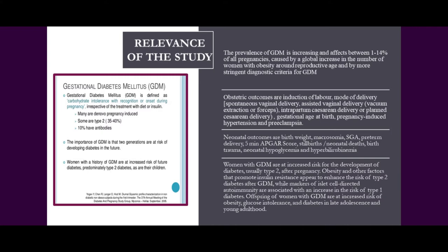So far as the obstetric performance of the woman is concerned, there are many effects. Labor is induced quite early in the pregnancy period. Mode of delivery could be spontaneous vaginal delivery, or vacuum extraction or forceps may be needed. There is also an effect on gestational age at birth, with fetuses being born at a much younger gestational age than normal. There is also fear of pregnancy-induced hypertension and preeclampsia. As for neonates, they are also not spared — there could be effects on birth weight, especially macrosomia leading to higher birth weight babies, fear of preterm delivery, abnormal 5-minute APGAR scores, stillbirth, neonatal death, birth trauma, neonatal hypoglycemia, and hyperbilirubinemia.